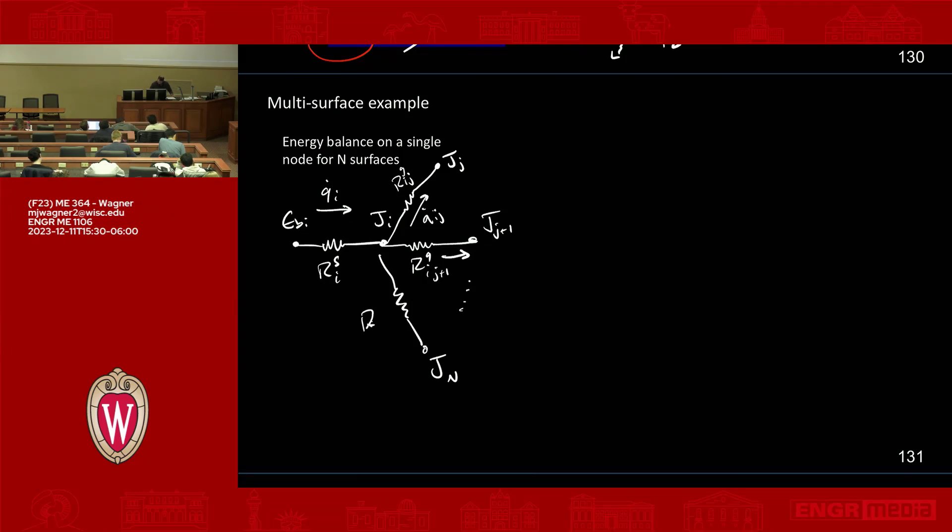You have another resistance here going to J sub n. So this would be RG from I to n. And you have the heat transfer here, Q dot from I to n.